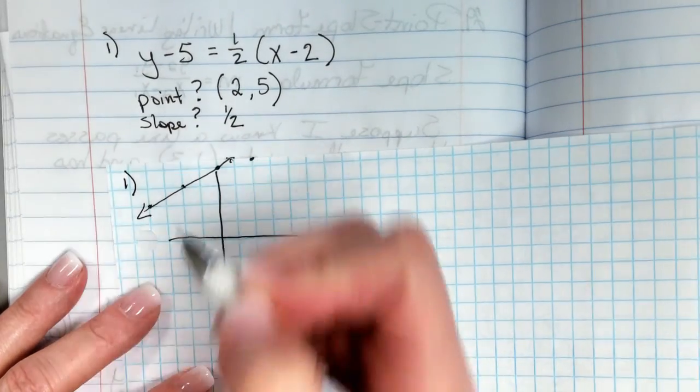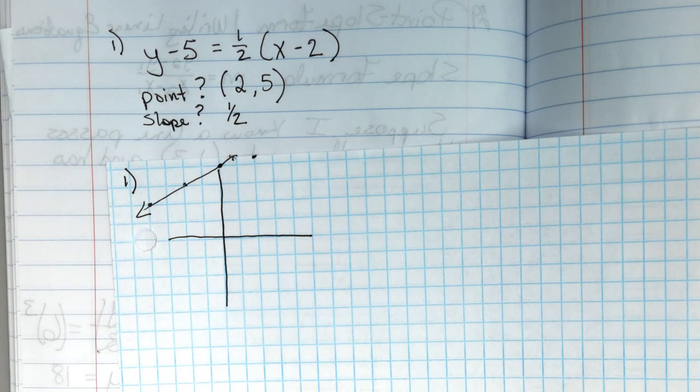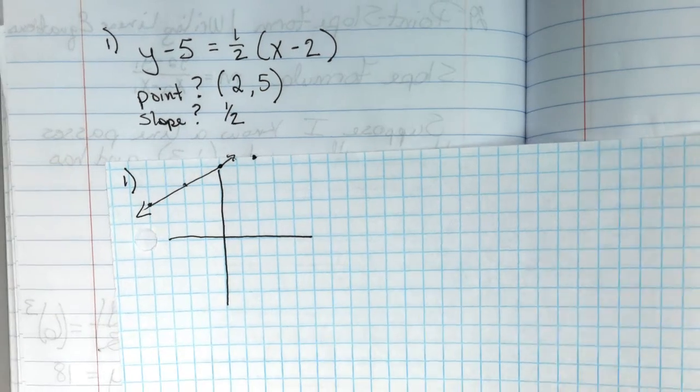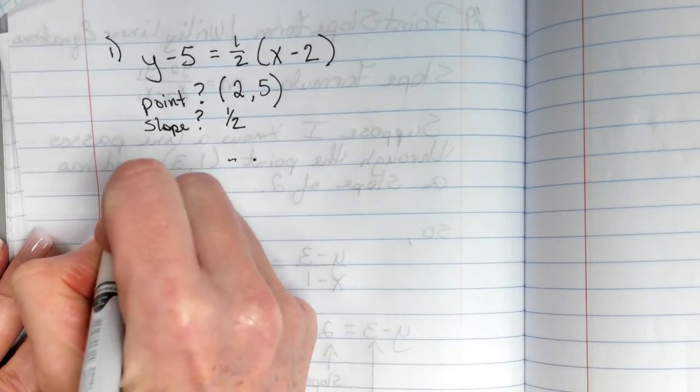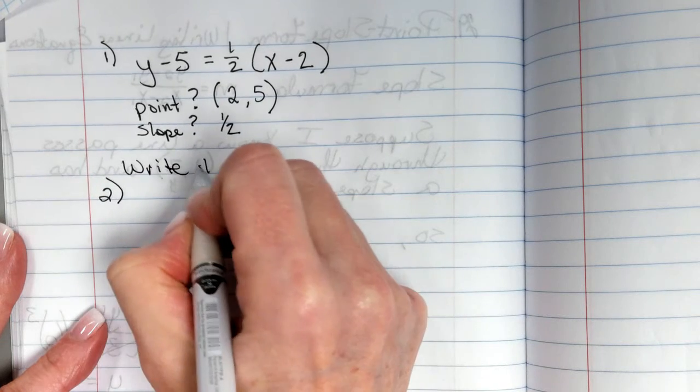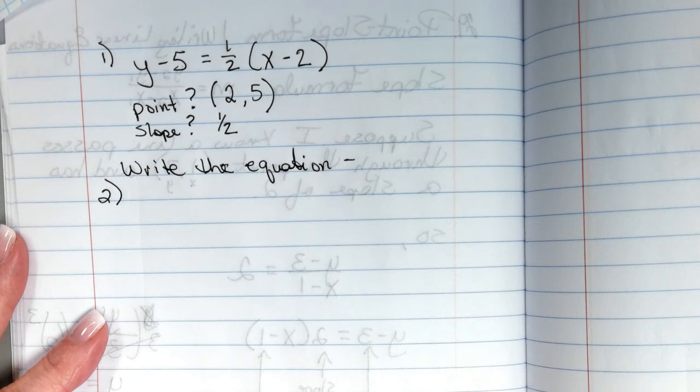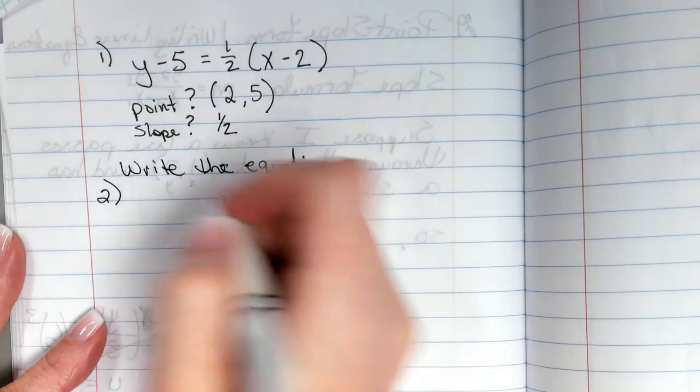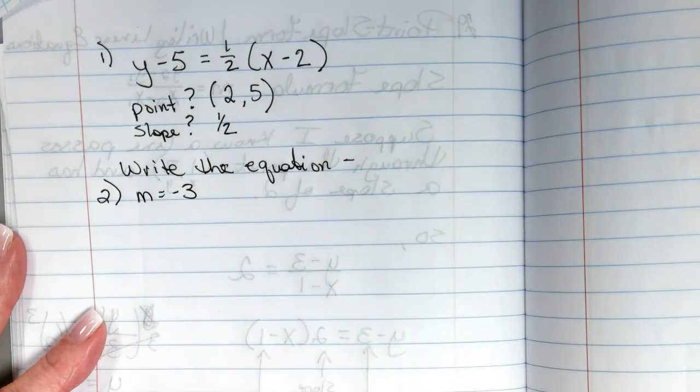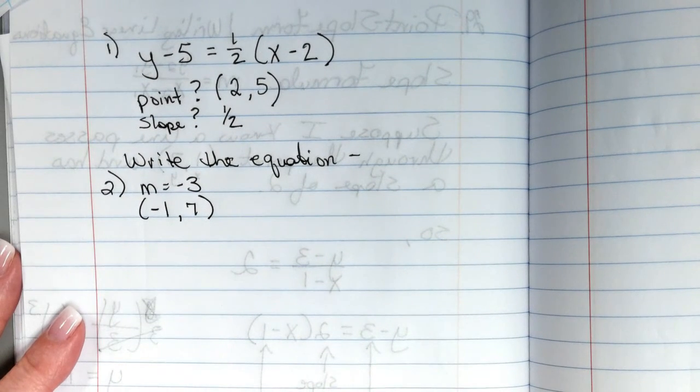Let's number these so they'll match because we're just going to glue this in somehow. So I can graph it just by having the point and the slope. Let's see. So this one, I want you to write the equation. And I'm going to give you the point, the slope. So I want you to write the equation and I want you to graph it. So let's do slope of negative 3 and a point of (-1, 7). So write your equation and graph it.